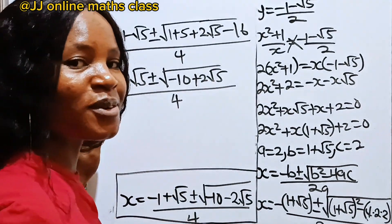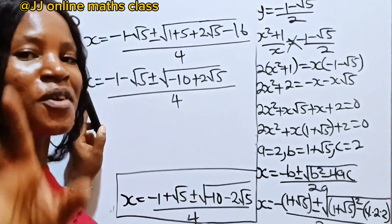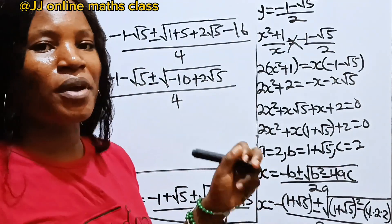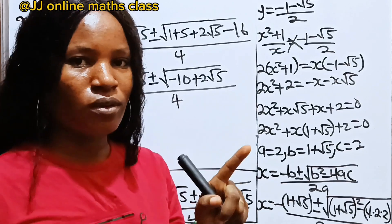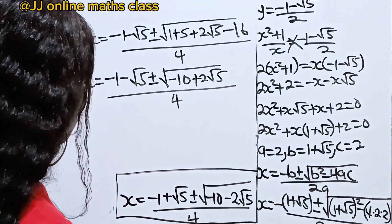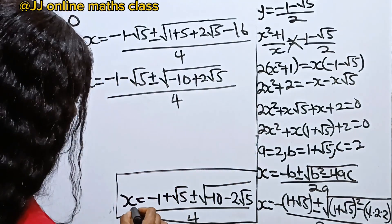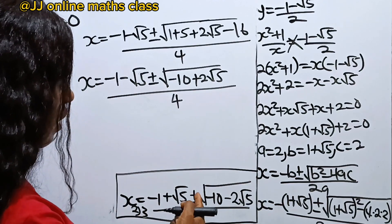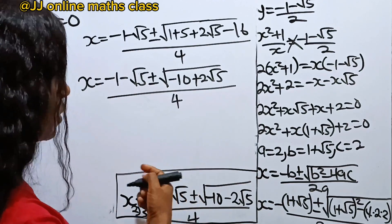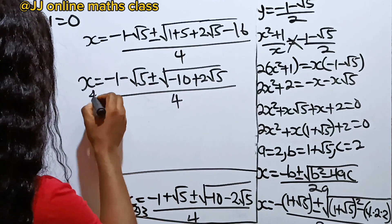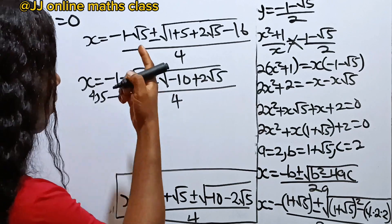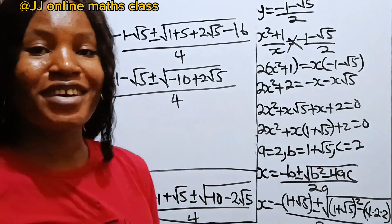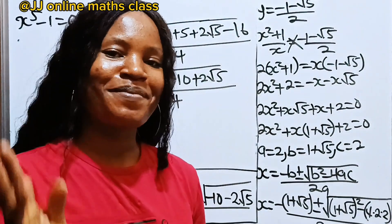We've actually gotten the whole solution for x. The first solution is x equals 1. The second and third come from the plus or minus in the first quadratic case. The fourth and fifth come from the plus or minus in the second quadratic case. Thank you so much for watching. Have a lovely day.